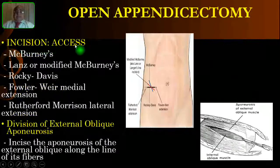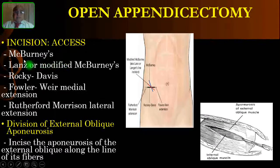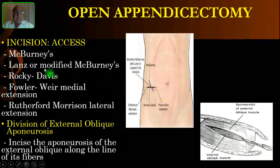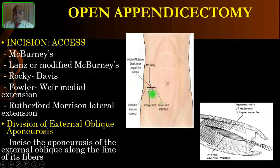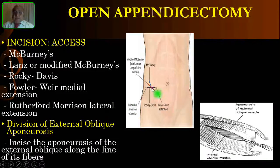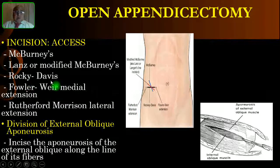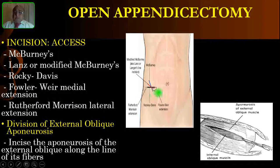What is the incision for this surgery? The classical one is the McBurney's incision, denoted by the blue line here. Another option is a slightly oblique incision called the Lanz or modified McBurney's incision, shown in red. There is also a purely transverse incision called the Rocky-Davis incision, which is more commonly used in the US.